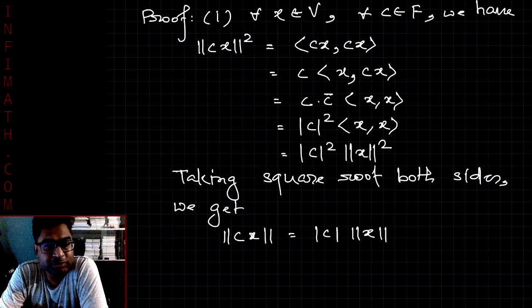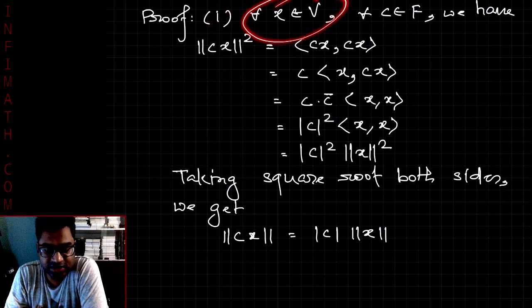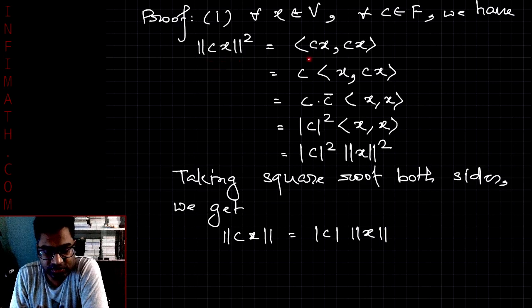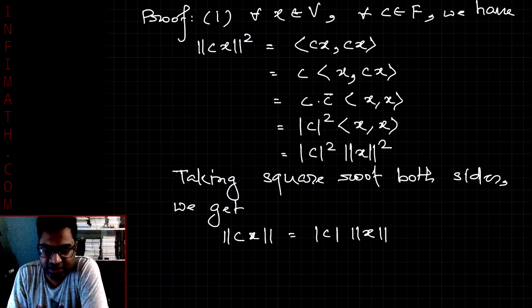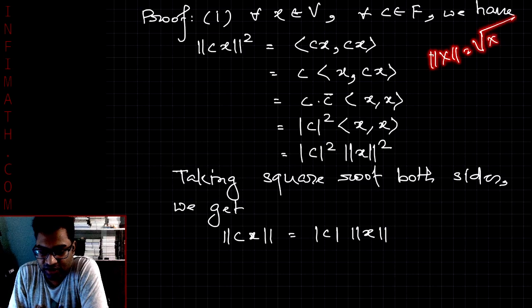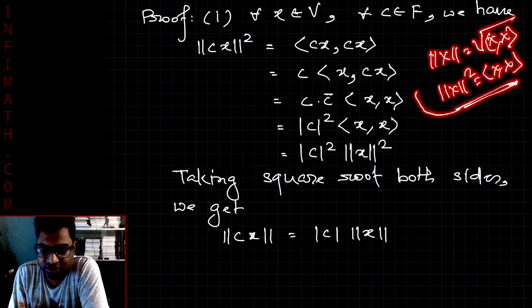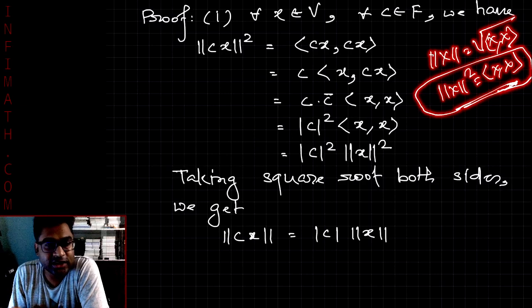Now we will see the proof of these properties, starting with property one. For any vector x in V and any scalar c in F, the square of the norm of the scalar multiple cx will be equal to the inner product of cx with itself — this is basically the definition of the norm, since norm of x equals the square root of ⟨x, x⟩, and squaring both sides gives norm of x squared equals ⟨x, x⟩.